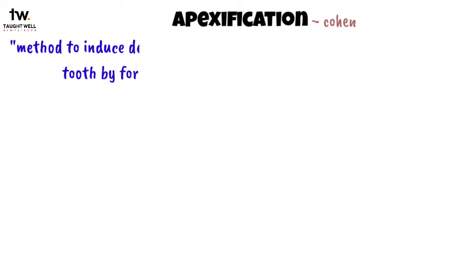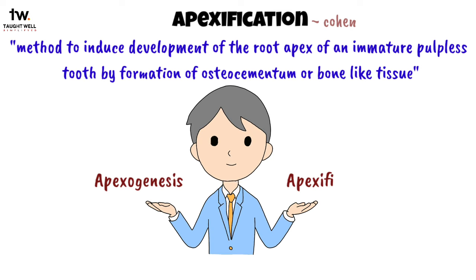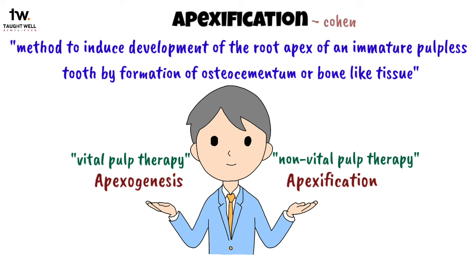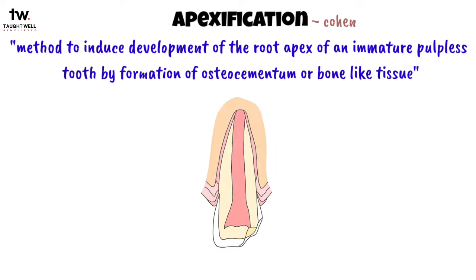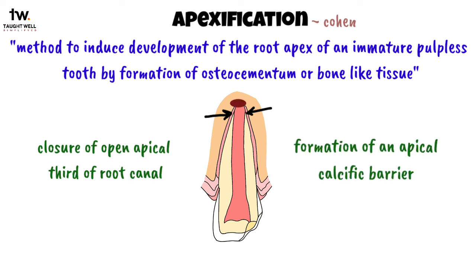Moving on, let's discuss apexification. According to Cohen, it is defined as a method to induce development of the root apex of an immature pulpless tooth by formation of osteocementum or bone-like tissue. The biggest difference between apexogenesis and apexification is that apexogenesis is a form of vital pulp therapy, whereas apexification comes under non-vital pulp therapy. The basic objective of apexification is to induce either closure of the open apical third of the root canal, or the formation of an apical calcific barrier against which obturation can be achieved.